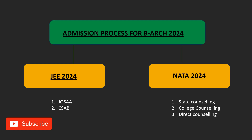Let us discuss the admission process. Since we have given the JEE and NATA examinations, we have different types of counselling. For those who don't know, we have JOSAA and CSAB for NITs, IITs, and SPAs. JOSAA means Joint Seat Allocation Authority and CSAB means Central Seat Allocation Board. You can register yourself using your JEE score here.